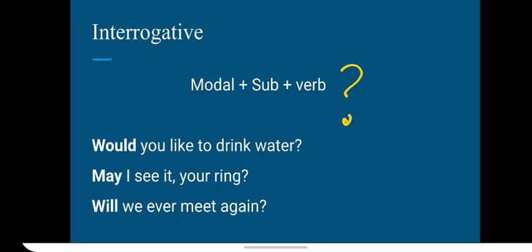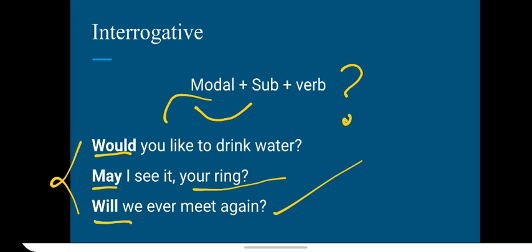And when we are making a question, we need a question mark here. So normally, whenever you are asking a question with auxiliary verbs, the helping verb will come at the front. So would you like to drink water? You are asking here a question. May I see your ring? Will we ever meet again? See, whenever you are asking for permission or making a request or offering, we use this formation which is interrogative in its nature.